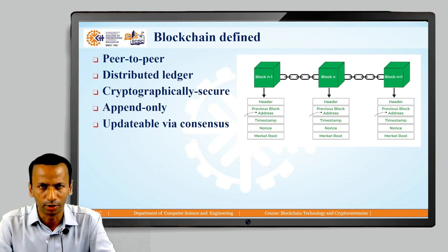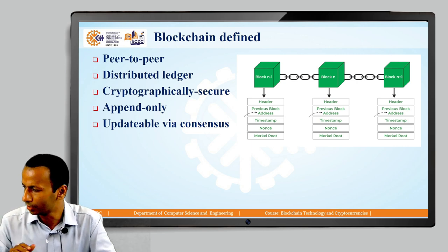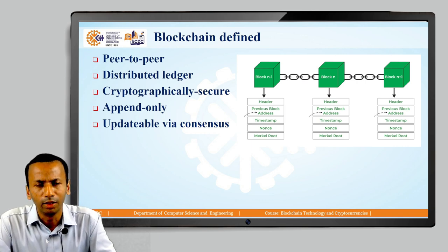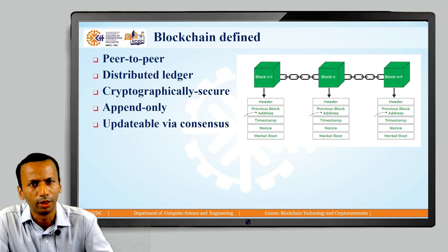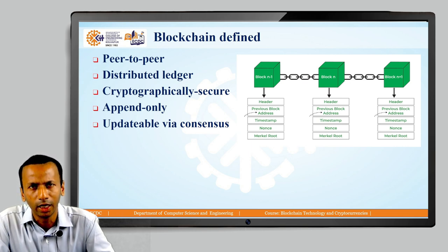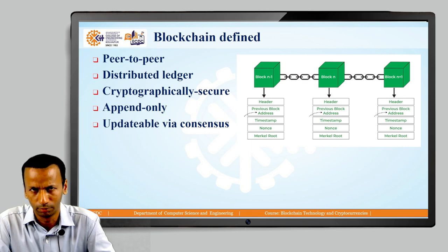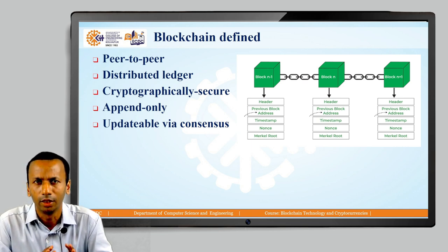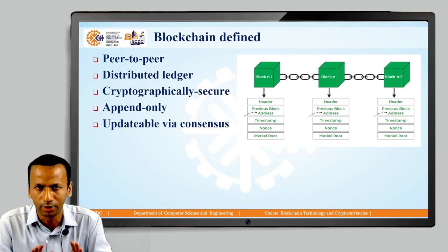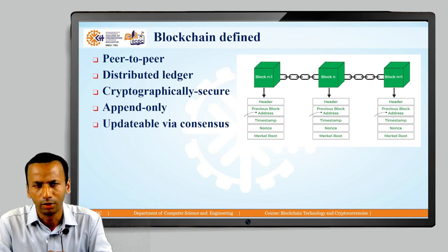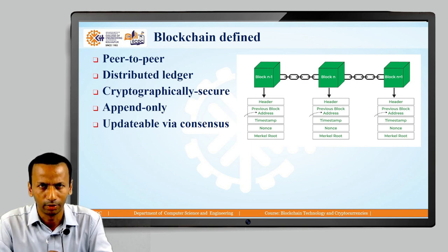The first term is peer-to-peer system. In a peer-to-peer system there is no central controller like a system administrator. Each and every node in the blockchain network is capable of sending and receiving messages with each other. There is no intermediary — like a server or system administrator — involved. All nodes can communicate without any intermediaries and send and receive information.